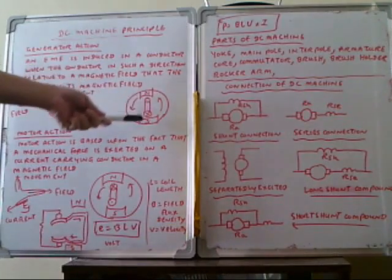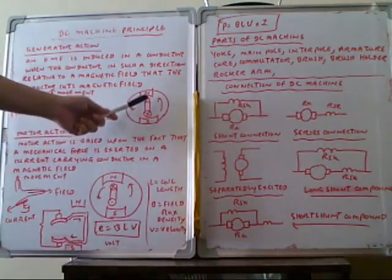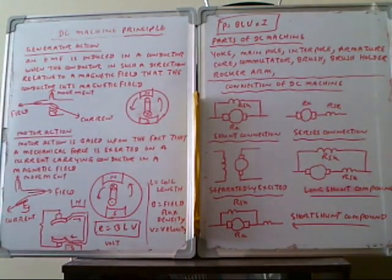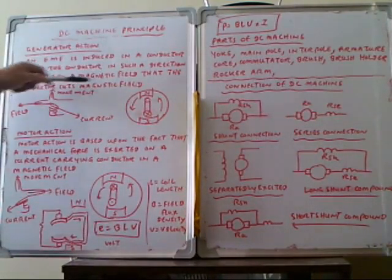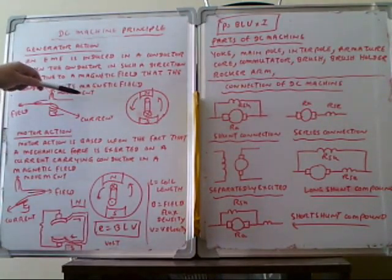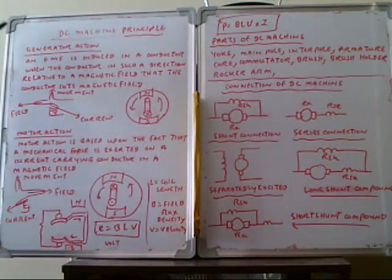The dot and cross notation indicates the current direction. This current direction also induces a voltage direction. The EMF is induced in the conductor when the conductor is in a direction related to the magnetic field such that the conductor cuts the magnetic field. When the conductor is moving under the magnetic field, the induced current and voltage are generated — this is the generator action.